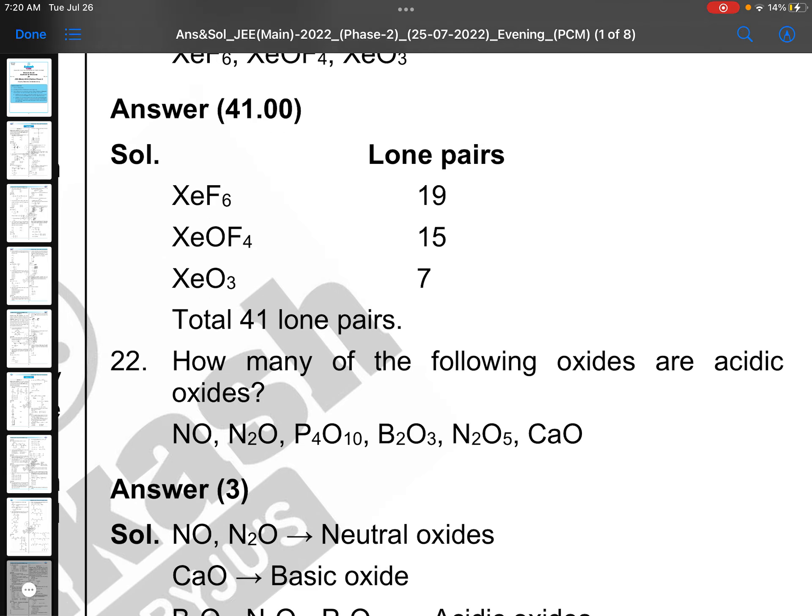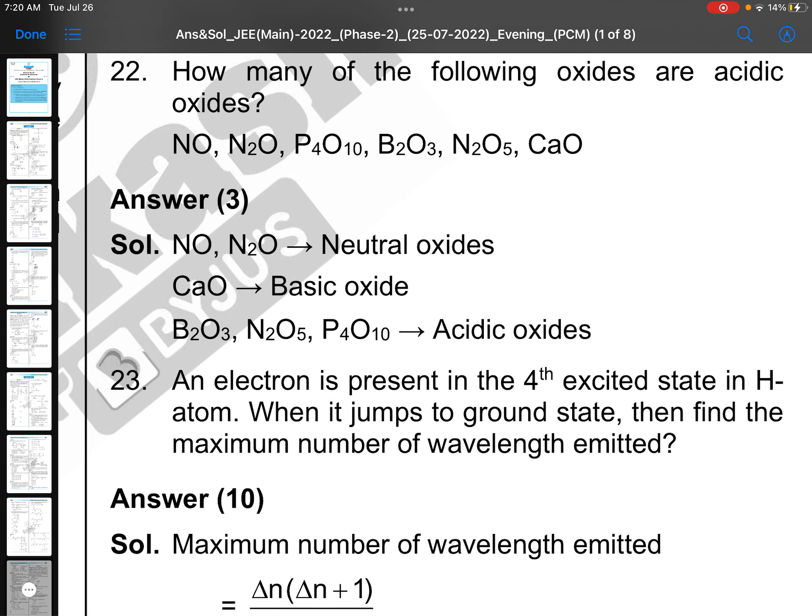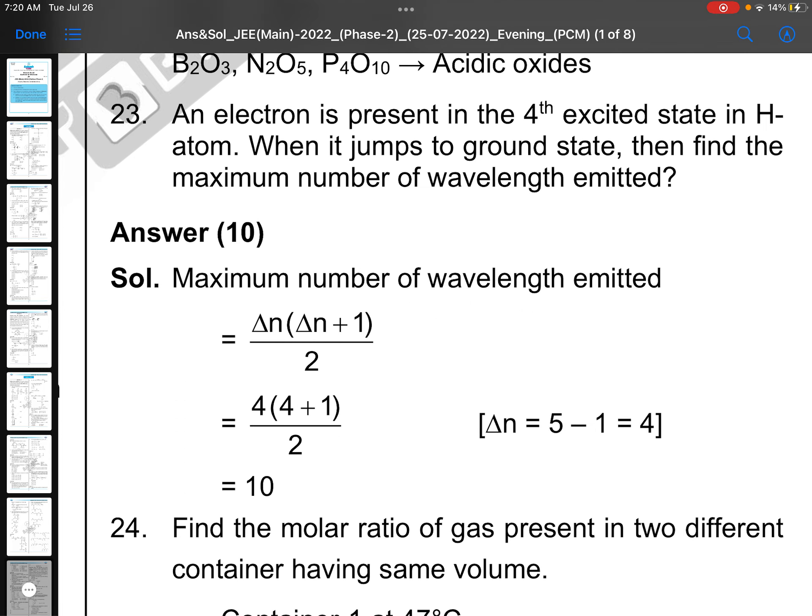How many of the following oxides are acidic oxides? Here NO is neutral, N2O is neutral, P4O10 is acidic, B2O3 is acidic, N2O5 is acidic, CO is basic. Metal oxides are basic, non-metal oxides are acidic. NO, N2O, CO are special, they are neutral. This is interesting.